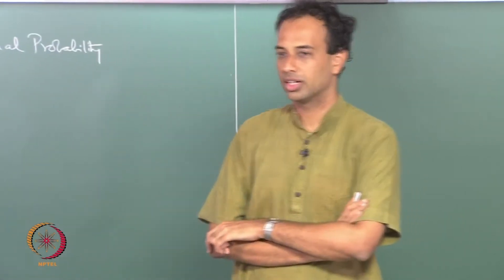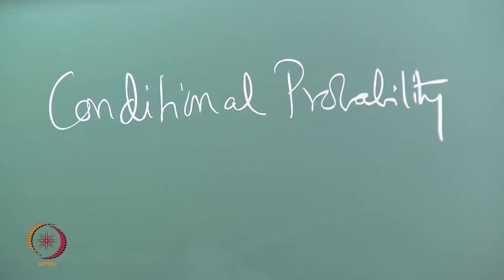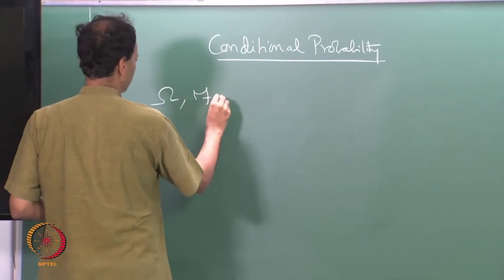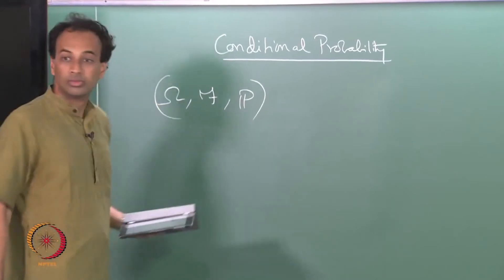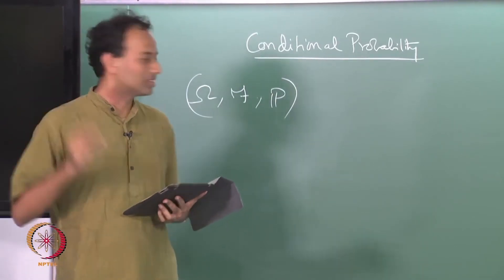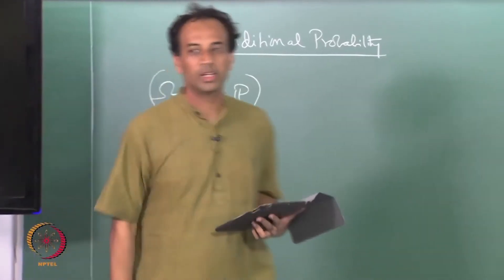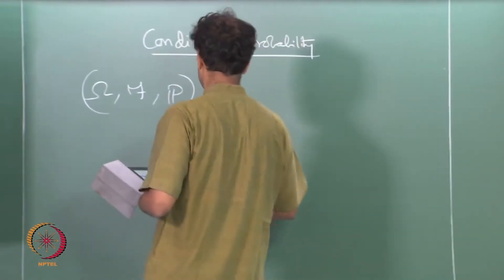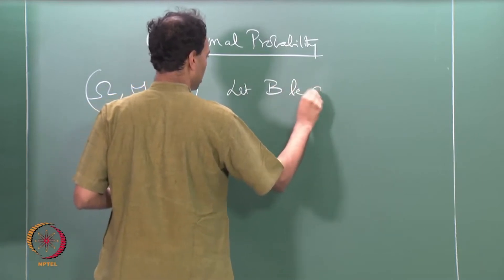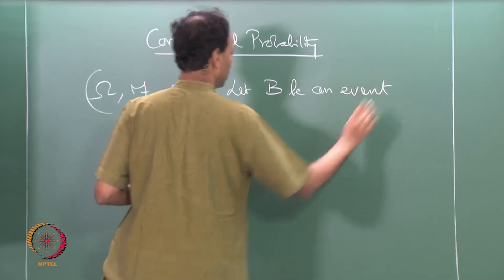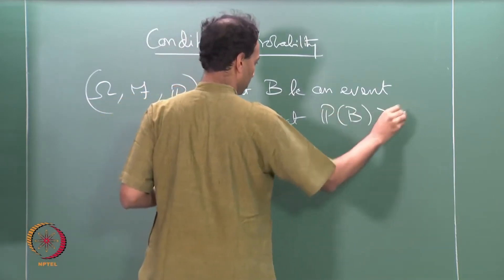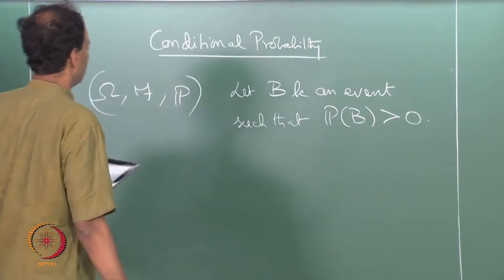Now we begin a new section on conditional probability. We have a probability space (omega, F, P). Now that we know probability spaces, everything we do will start with an omega F P — a sample space, a sigma algebra on the sample space, and some probability measure P on (omega, F). This is a probability space. Let B be an event such that P(B) is greater than 0. Definition.